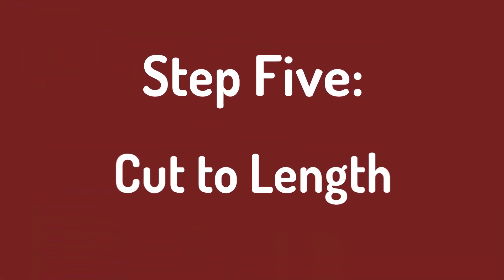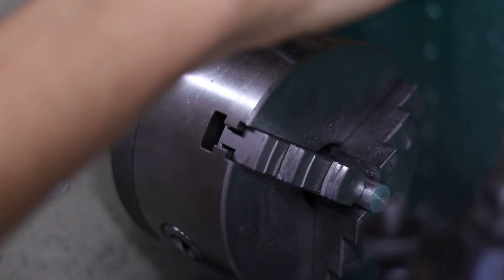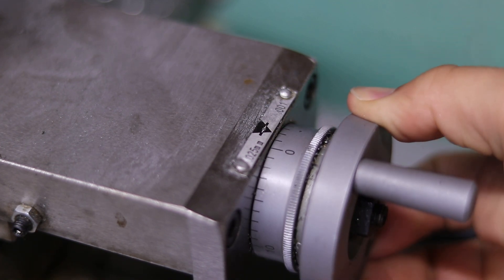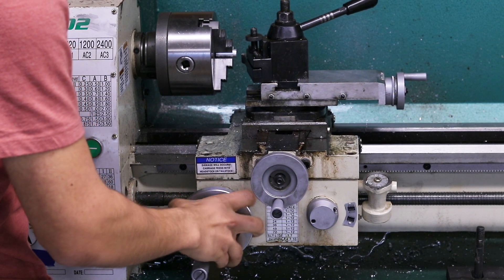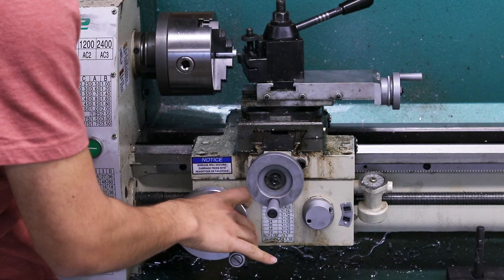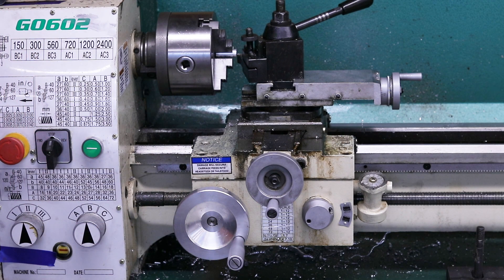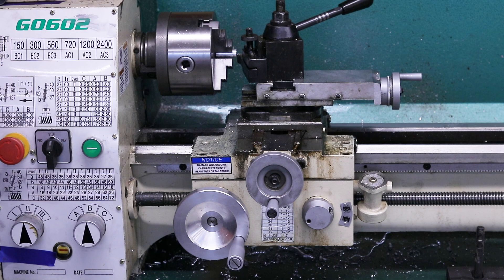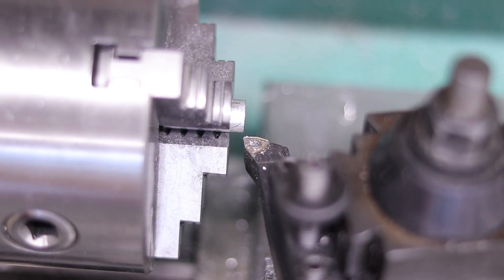Step five, cut to length. We're ready to cut to final length. Again, mount your part in the chuck. Spin the upper dial until it reaches zero. Now using the large dial, very lightly touch the face of the part with the tool. We'll treat this as zero. I'll note that there are much better ways of doing this on industrial lathes, but this is effectively the best precision we can achieve. Move the tool off the part, and then start the chuck.